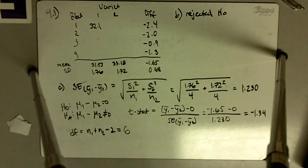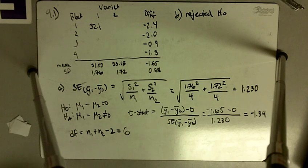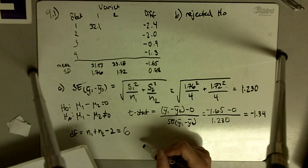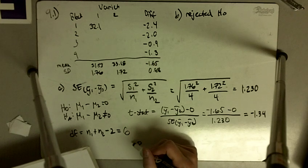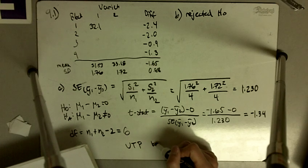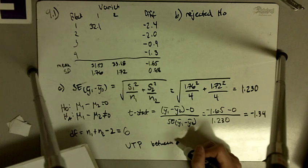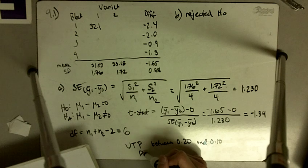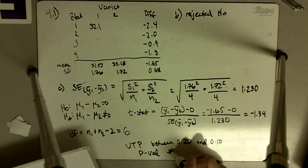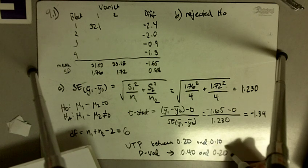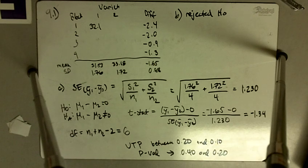So we go to our t-table and look for negative 1.34 under 6 degrees of freedom. We see that our upper tail probability is between 0.20 and 0.10. So our p-value, doubling for the two-tailed test, is going to be between 0.40 and 0.20.